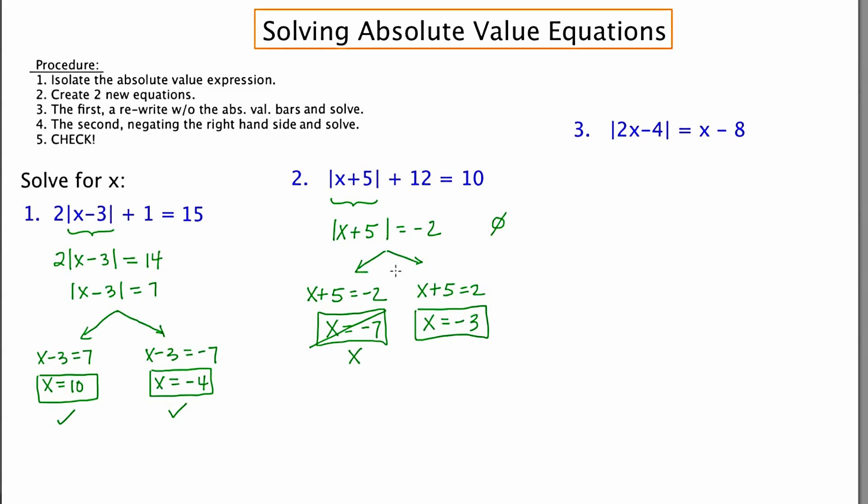Now we'll check -3. -3 + 5 is 2. The absolute value of 2 is 2, and 2 + 12 is 14, not 10. This one does not work either. So in fact, this one has no solution. There's no answer that you're going to get that's going to work. And again, many of you might have noticed that at this step right here, the absolute value can never equal something negative.